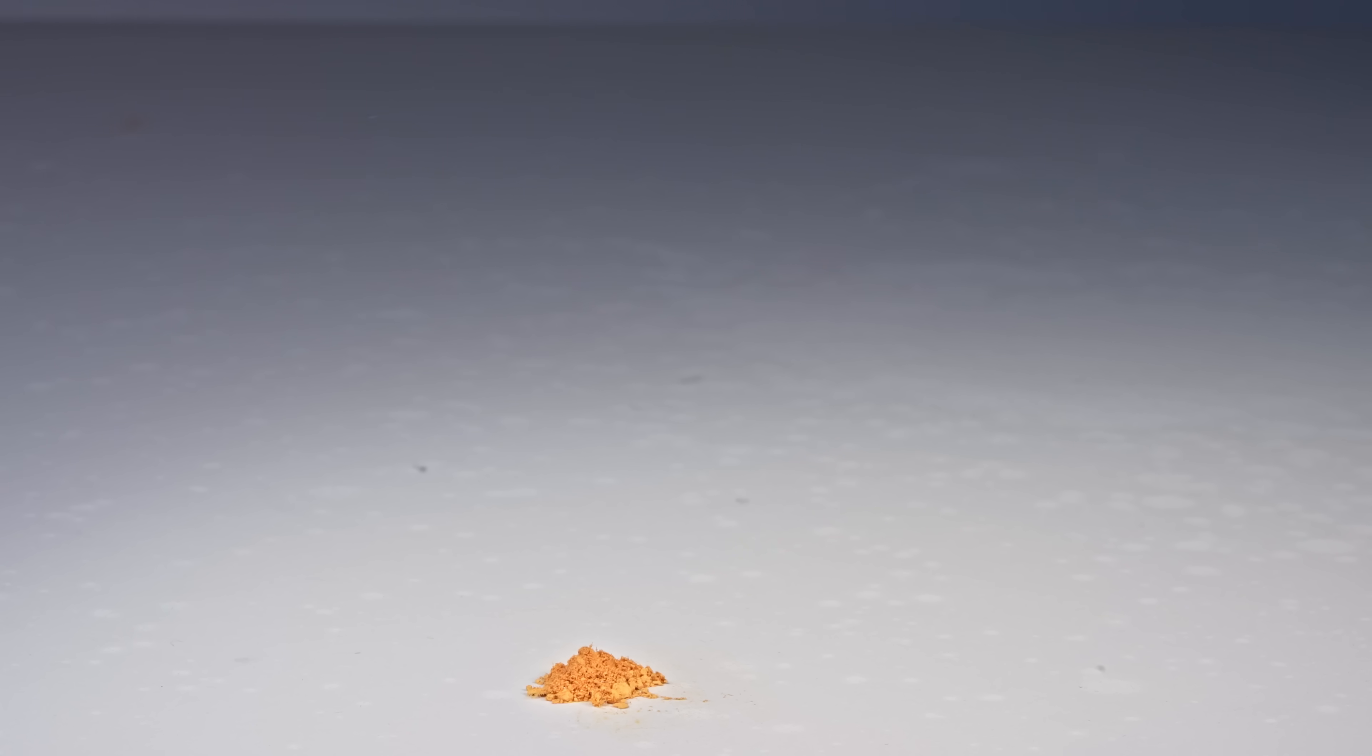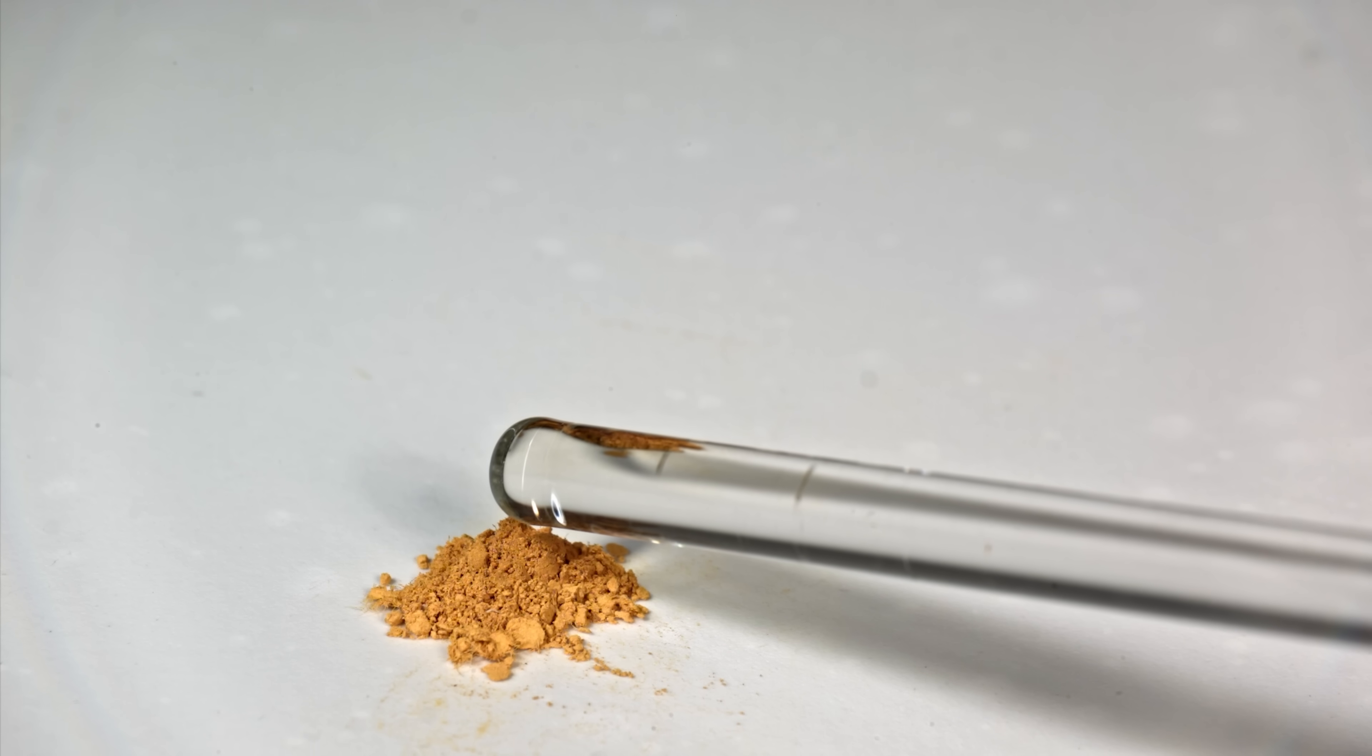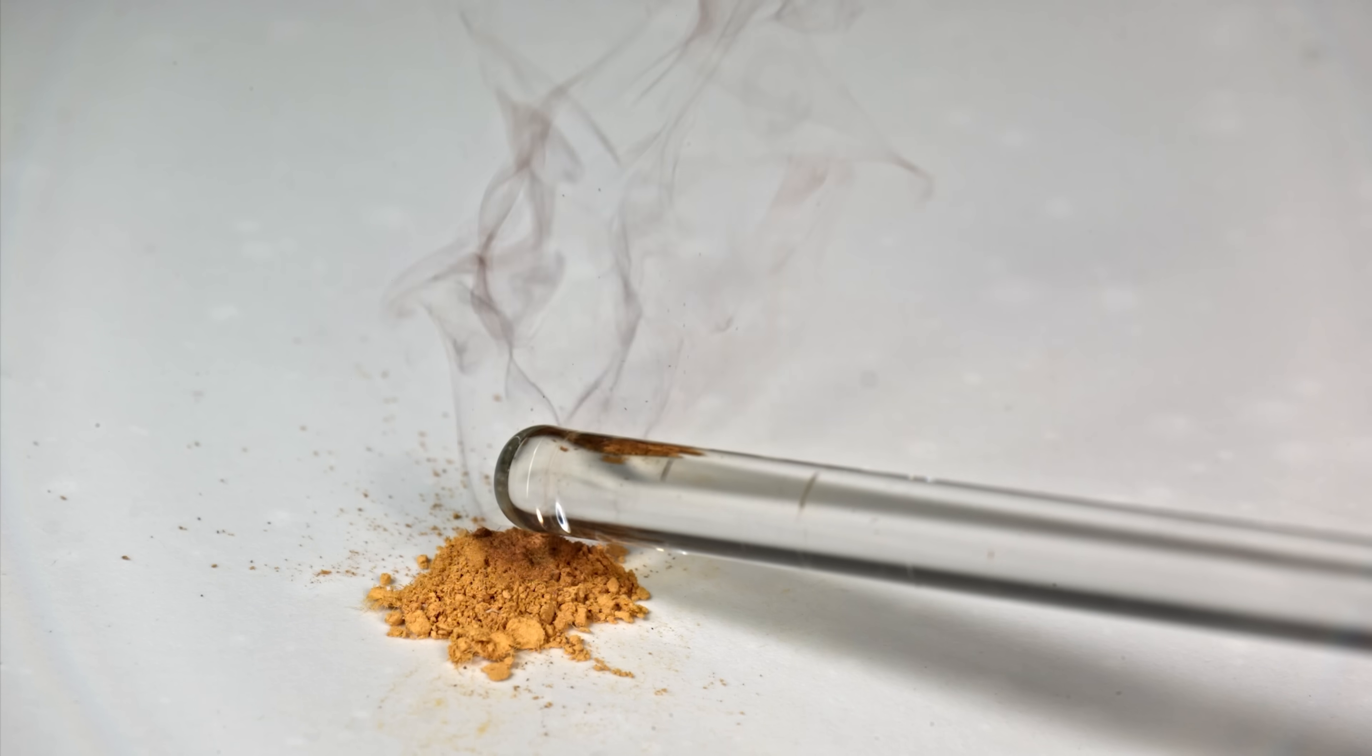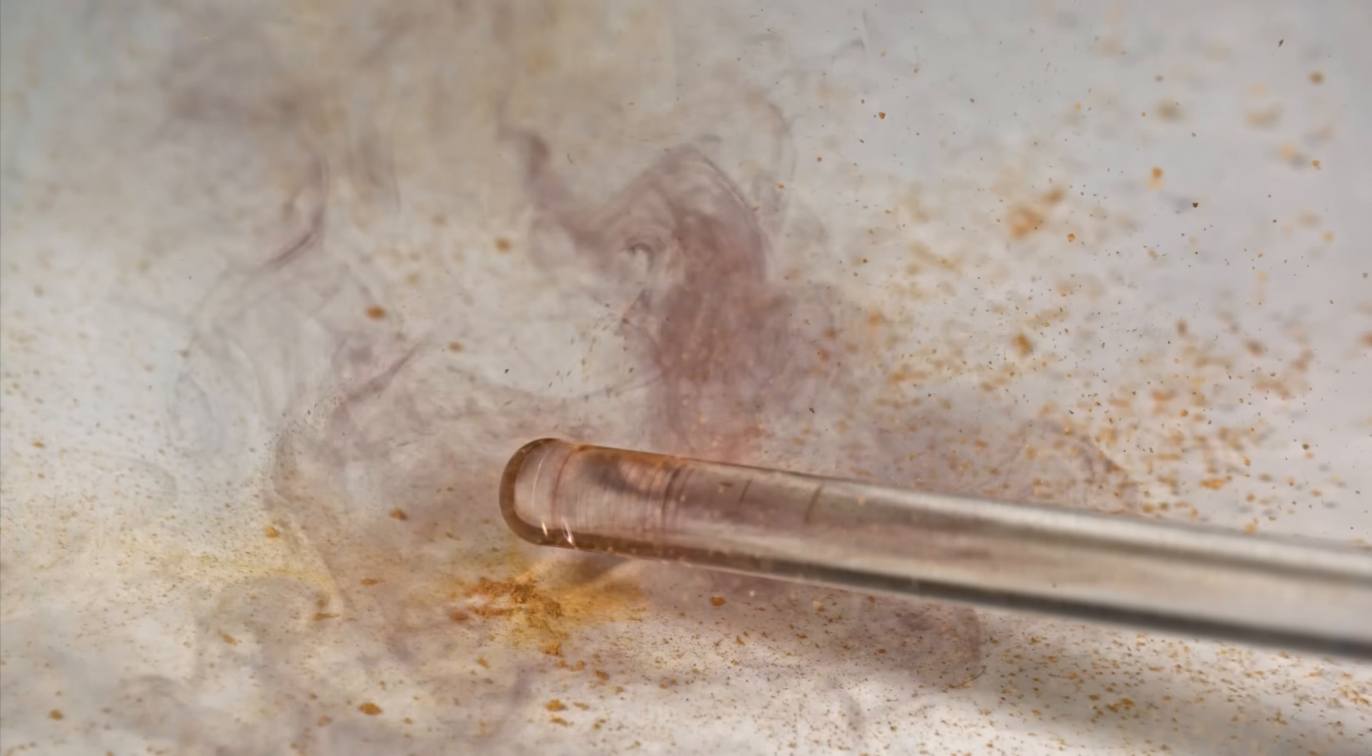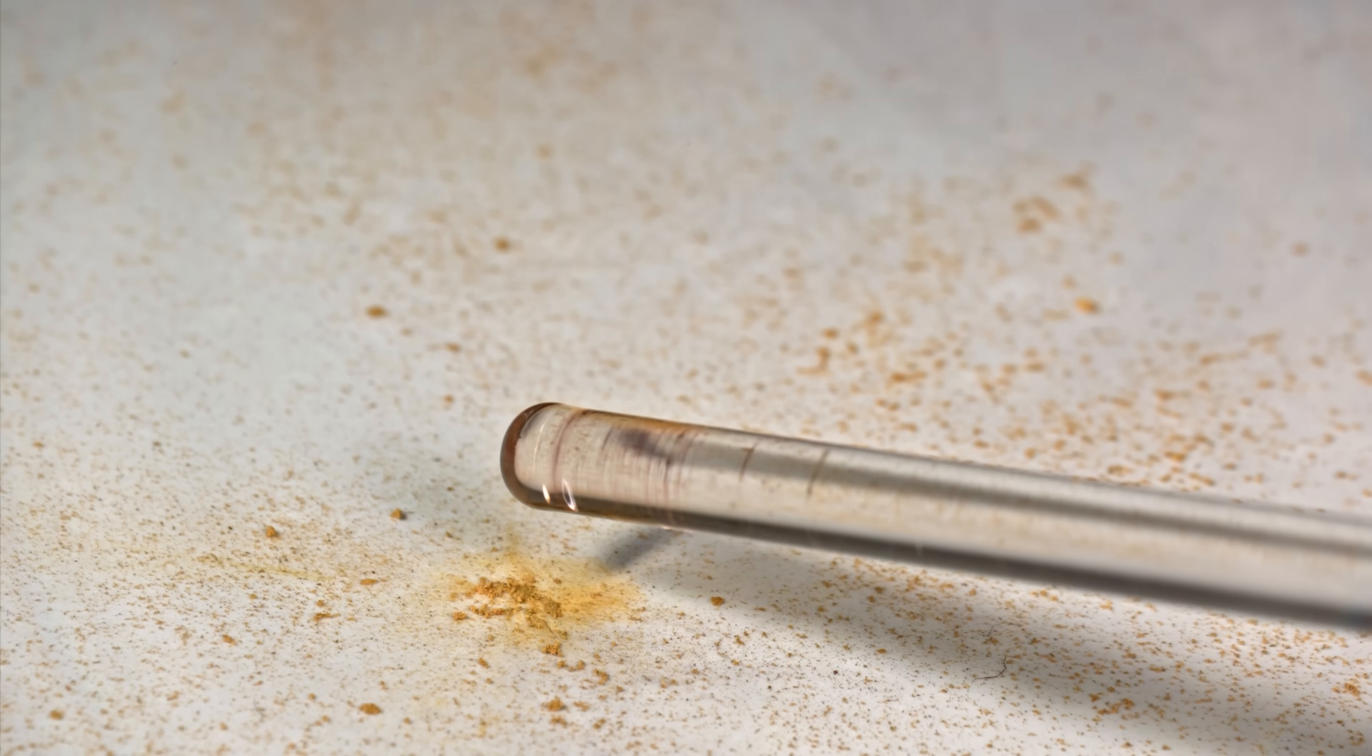Let's try touching it with a hot glass rod. Yeah, this method is much more effective. Let's watch it in slow motion. Now you can clearly see the mysterious purple smoke that puzzled chemists and alchemists for centuries.